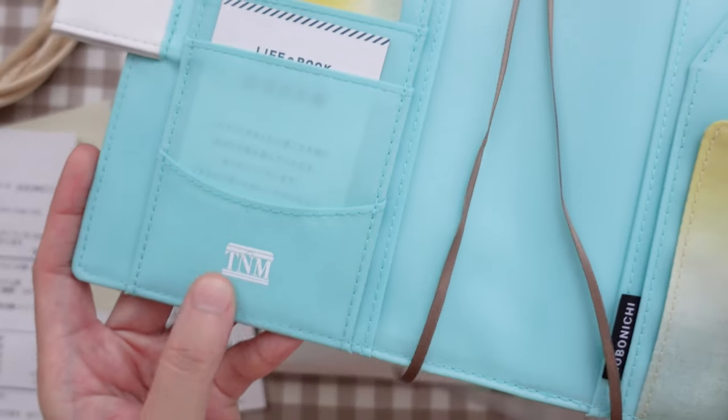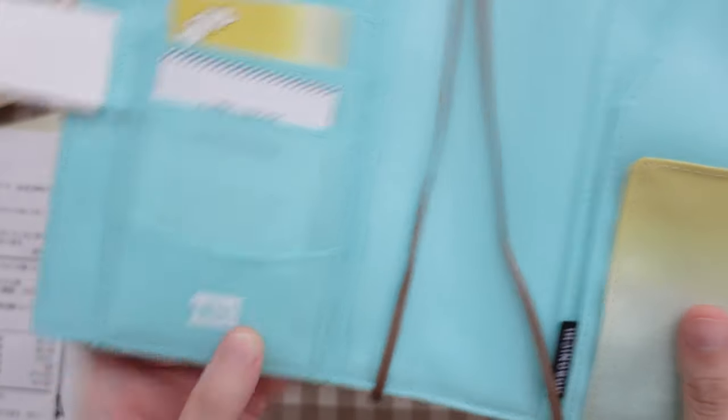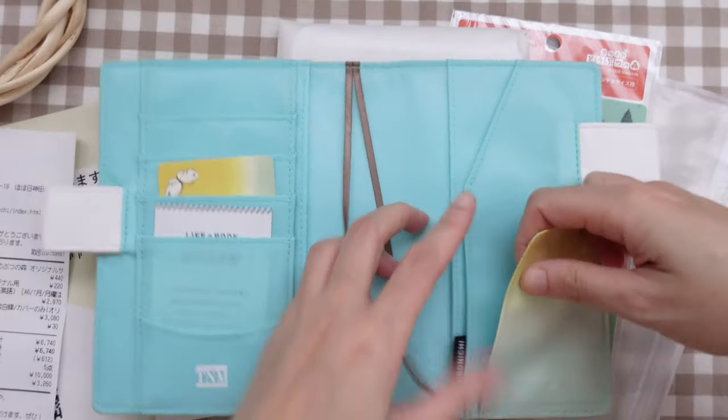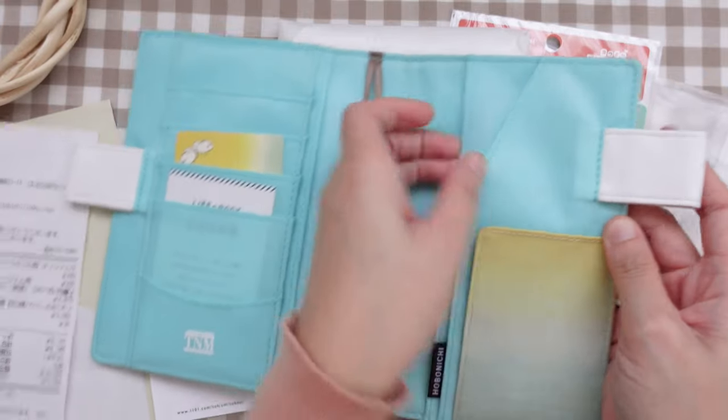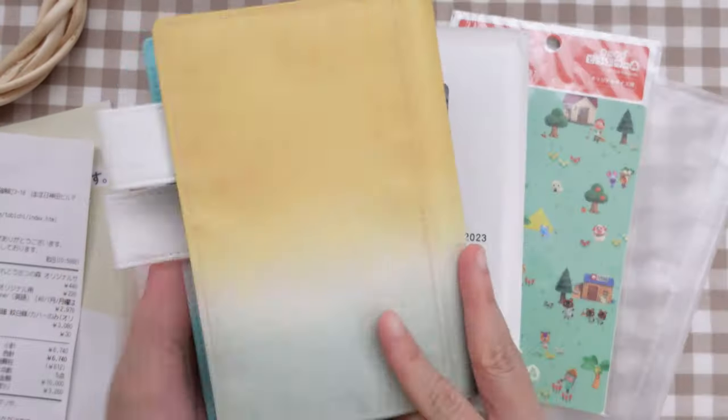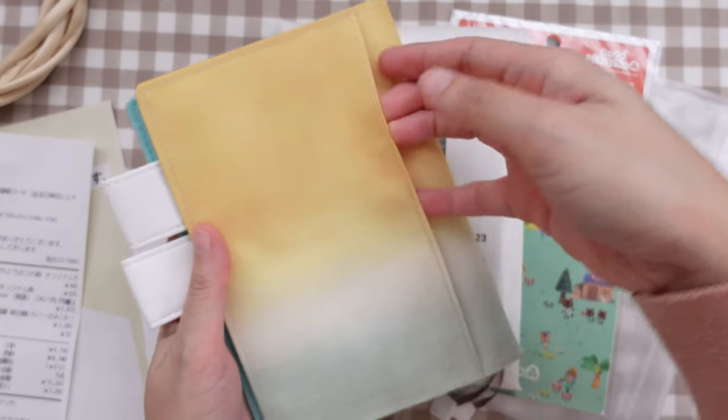They also have it in Japanese at the back. So here you can see TNM, the Tokyo National Museum, and we have more pockets here on the right side. And this is what the back looks like. So here we have another pocket.